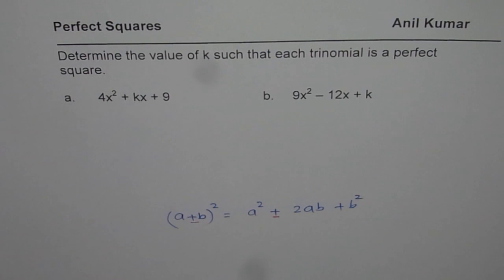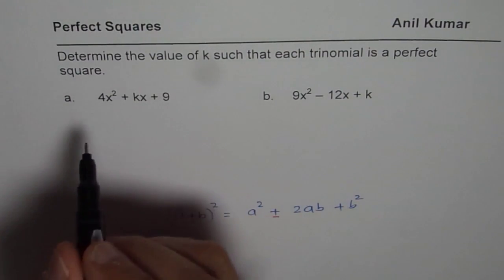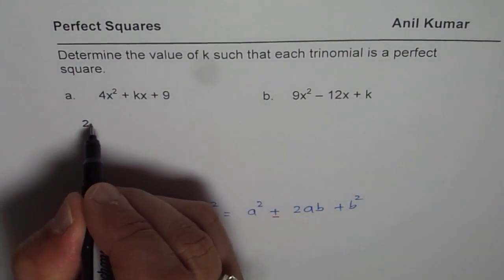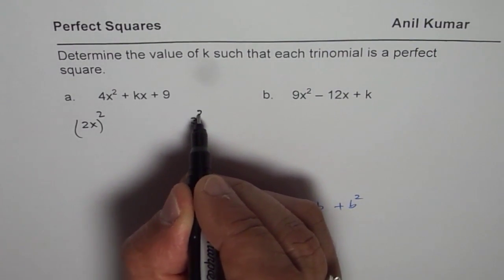Now let us see how to solve such a question. The first one is 4x² + kx + 9. 4x² could be written as (2x)², right? 9 could be written as 3².